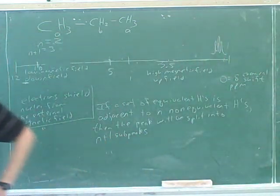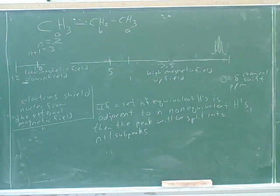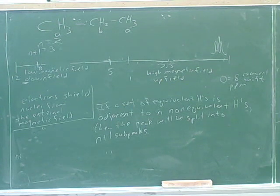Roughly speaking, you would have three subpeaks. That's called spin-spin splitting.